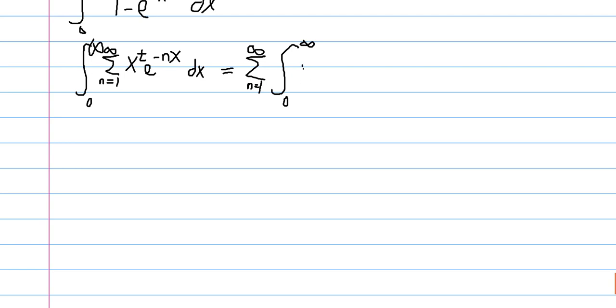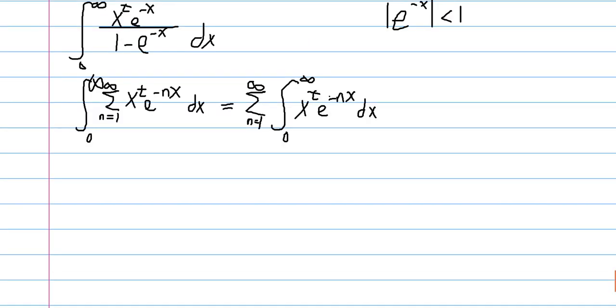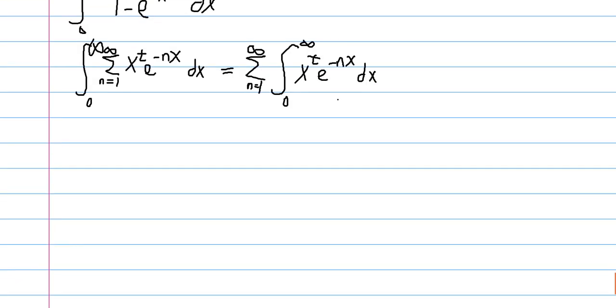And so we get that we are integrating x to the t, e to the negative x dx. And now this looks like something we could really apply the gamma function on. So if we were to do the substitution of u equals nx, then the bounds stay the same, and we get, well let's see what we get.